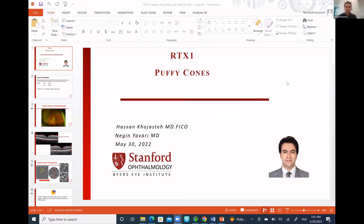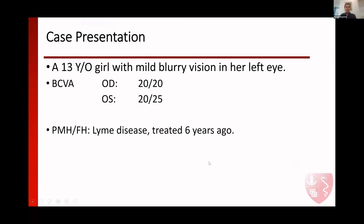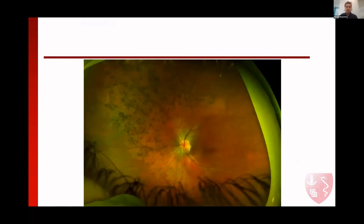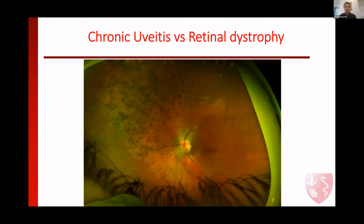Thank you for your kind invitation and thanks to colleagues for their nice presentations. The case was a young lady with blurred vision in her left eye. Visual acuity was 20/20 in the right eye and 20/25 in the left eye. In past medical history, she had Lyme disease several years ago, which was treated. This is the fundus photo of the left eye. Here is the challenge: is it chronic uveitis with some pigmental change, or a retinal dystrophy? This is always a challenge in our clinics.